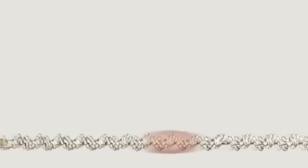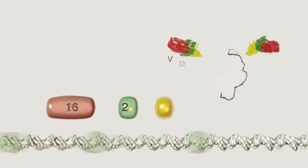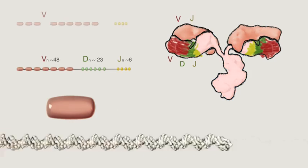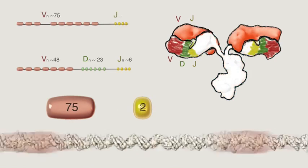In humans, there are multiple different copies of VDJ gene segments coding for the antibody heavy chain, and VJ for the antibody light chain.